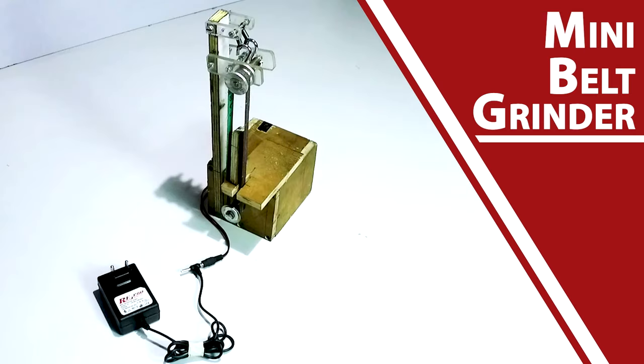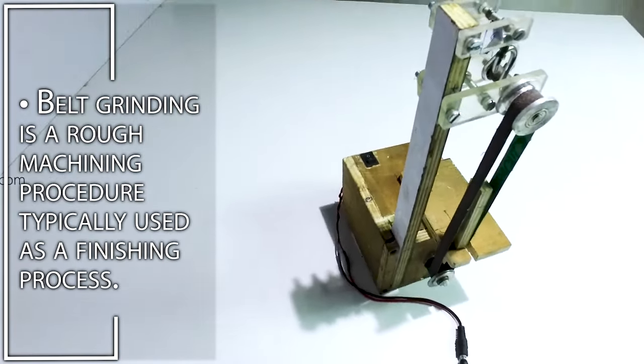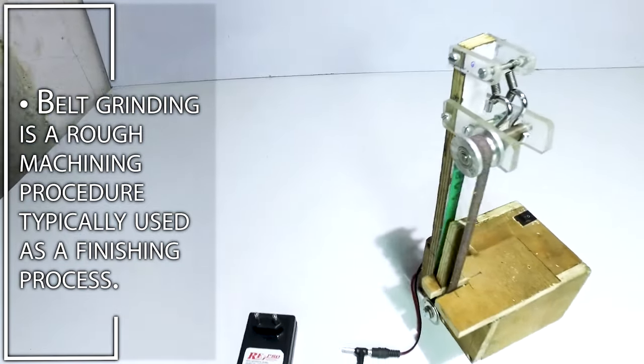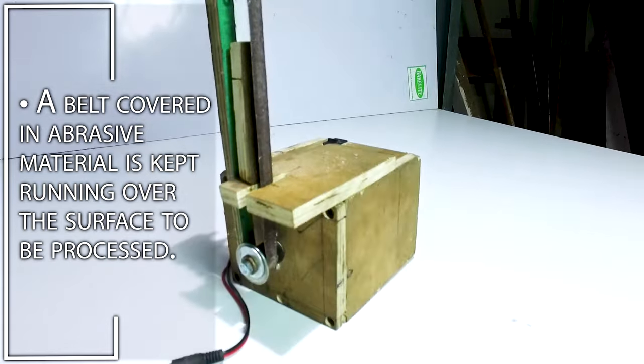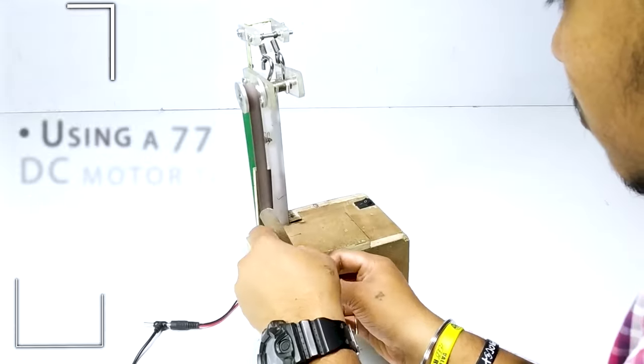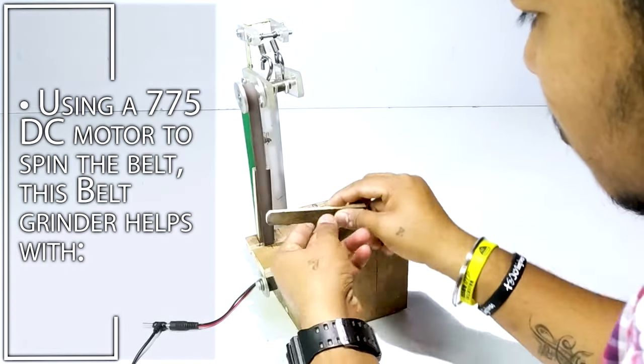Mini Belt Grinder. Belt grinding is a rough machining procedure typically used as a finishing process. A belt covered in abrasive material is kept running over the surface to be processed. Using a 775 DC motor to spin the belt,